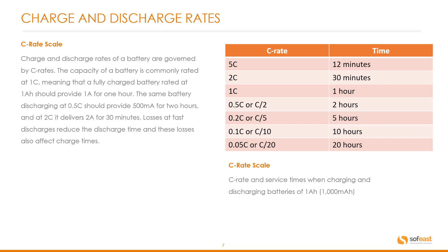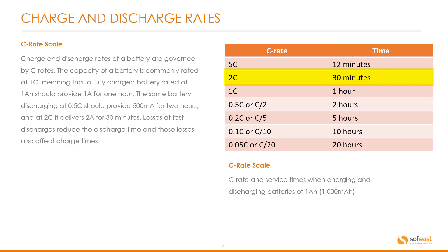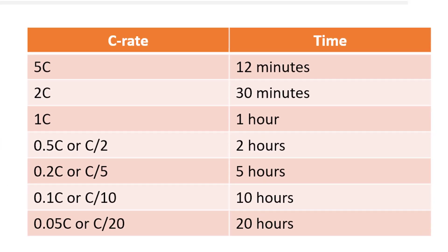This is commonly known as the C-rate scale. Charge and discharge rates of a battery are governed by C-rates. The capacity of a battery is commonly rated at 1C, meaning that a fully charged battery rated at 1A should provide 1A for 1 hour. The same battery discharging at 0.5C should provide 500mA for 2 hours. At 2C it delivers 2A for 30 minutes. Losses at fast discharges reduce the discharge time, and these losses also affect charge times. We can see the C-rate and the charge times on the right hand side here in this table.